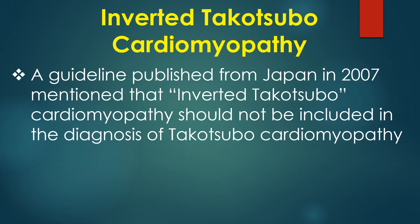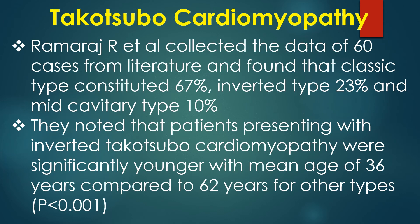A guideline published from Japan in 2007 stated that inverted Takotsubo cardiomyopathy should not be included in the diagnosis of Takotsubo cardiomyopathy. Ramraj and colleagues collected data from 60 cases in the literature and found that the classic type constituted 67%, the inverted type 23%, and the mid-cavity type 10%. Patients with inverted Takotsubo were significantly younger, with a mean age of 36 years compared to 62 years for the other types.